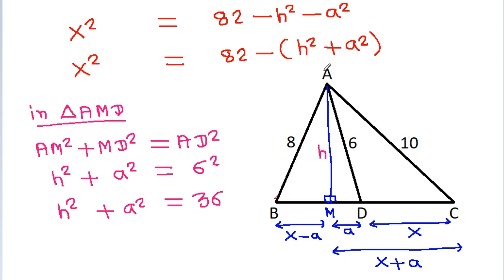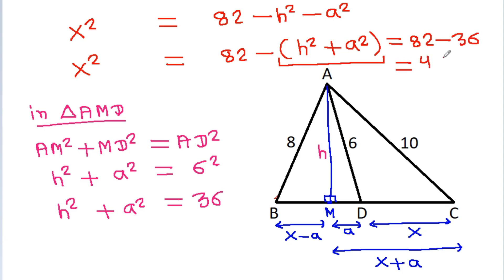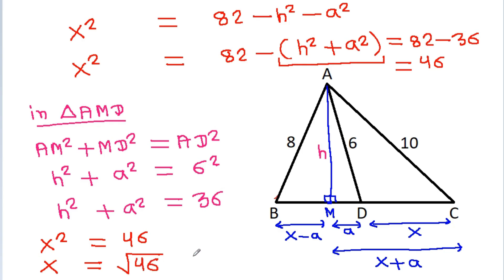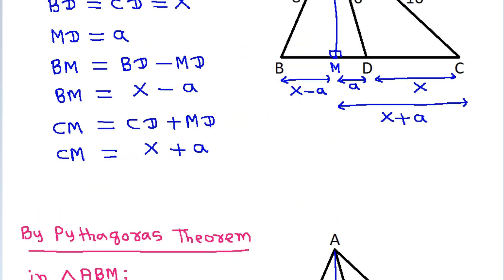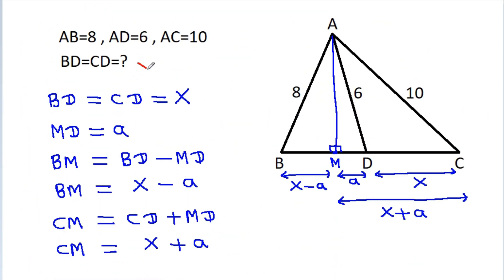So X square is equal to 82 minus H square plus A square, which is 36, and it will be equal to 46. So X square is equal to 46. That means X will be equal to square root of 46.